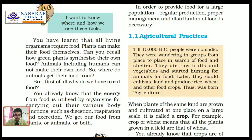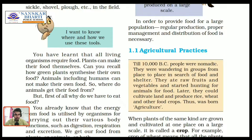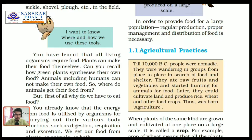In order to provide food to such a large population like India, we need regular production, proper management and proper distribution. We will be discussing these three topics mainly in this chapter: how we regularly produce crops, how to properly manage the crop and crop field, and the storage of food.